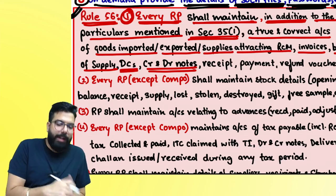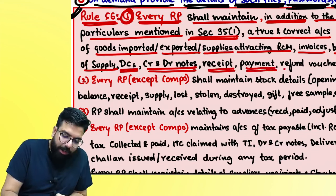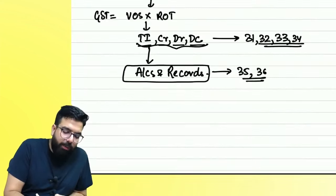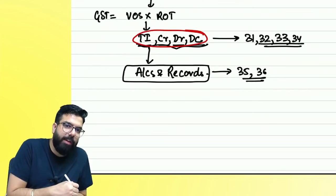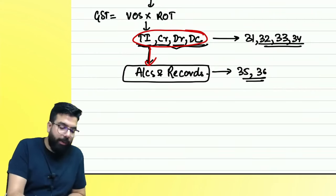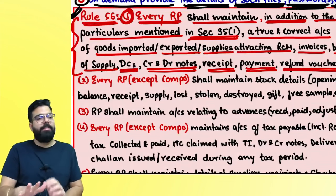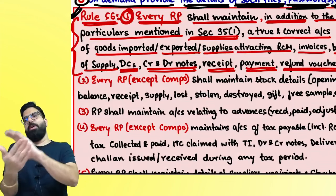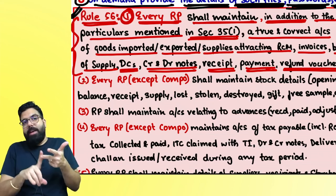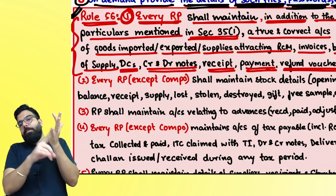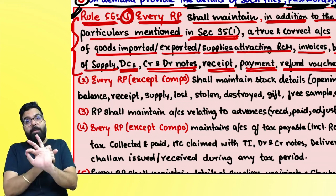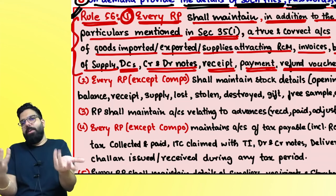Rule 56.2: Every registered person except a composition dealer shall maintain stock details — opening balance, goods received, goods supplied, goods stolen, lost, destroyed, gifted, or given as free samples. For example: opening balance 1,000 units + 100 purchased = 1,100; sold 500, free sample 100, eaten by rats 100 — remaining 400. If the officer finds only 300 units, he will assume 100 units were supplied and issue a demand order. Composition dealer is exempt from maintaining stock details.